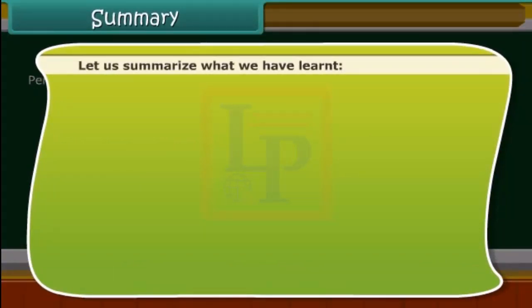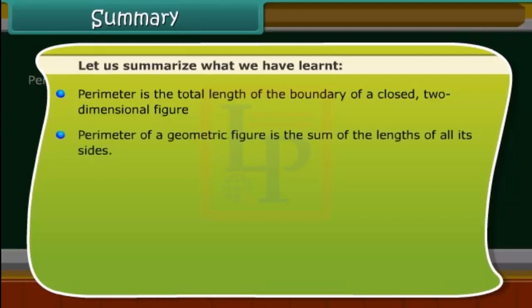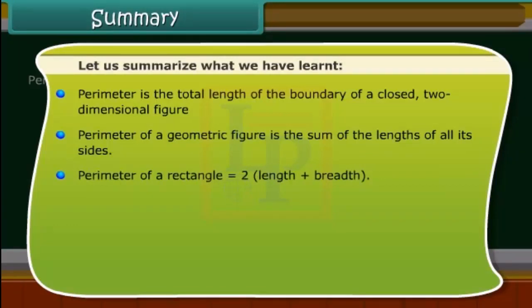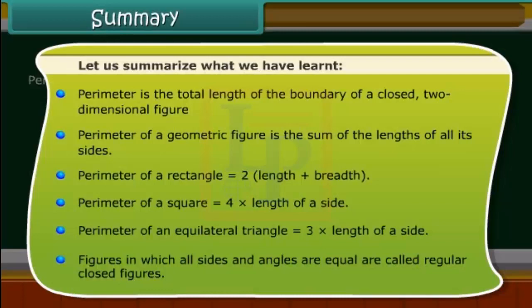Let us summarize what we have learned. Perimeter is the total length of the boundary of a closed 2-dimensional figure, and it is the sum of the lengths of all sides. Perimeter of a rectangle = 2 × (length + breadth). Perimeter of a square = 4 × side. Perimeter of an equilateral triangle = 3 × side. Figures in which all sides and angles are equal are called regular closed figures.